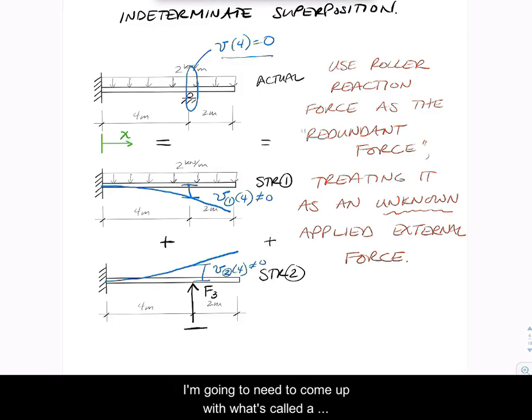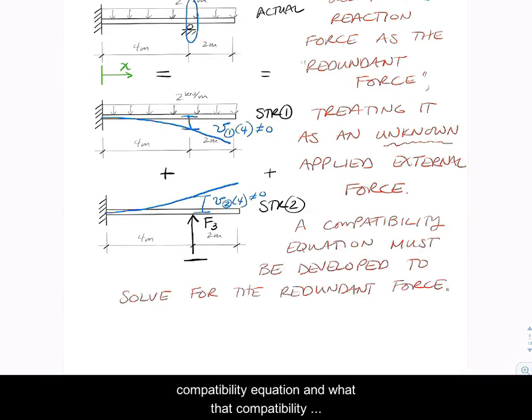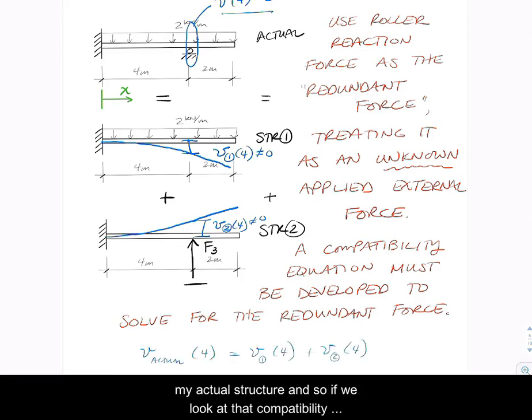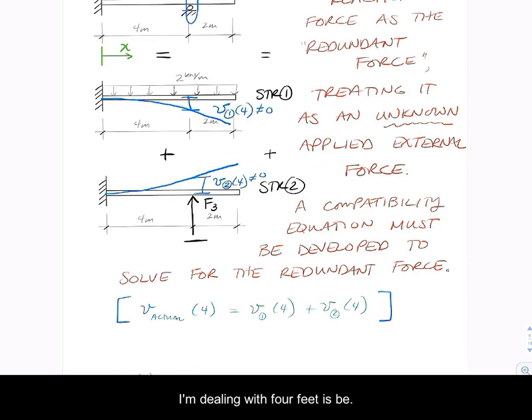And so to preserve my superposition that my actual beam has zero deflection, I'm going to need to come up with what's called a compatibility equation. And what that compatibility equation is going to relate is structure one and structure two to my actual structure. So if we look at that compatibility equation, it looks like v in the actual structure is going to equal v in structure one at four plus v in structure two at four.